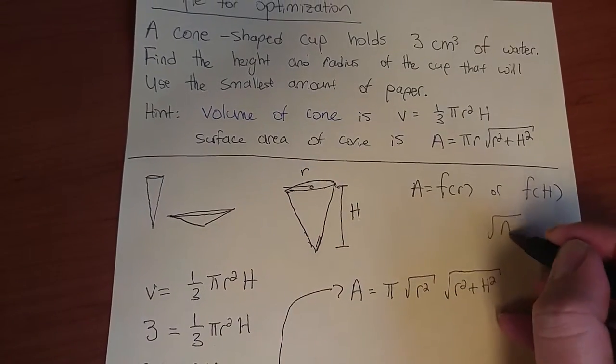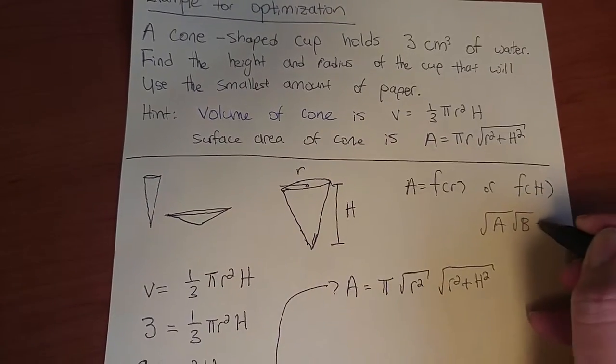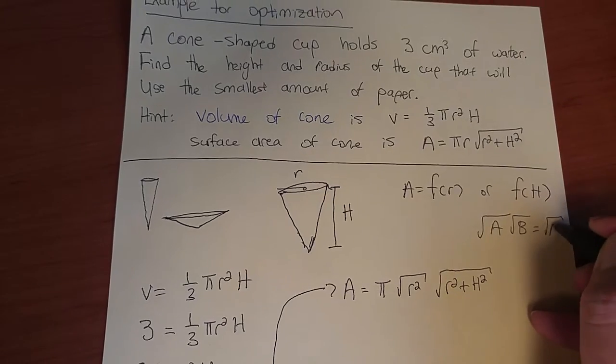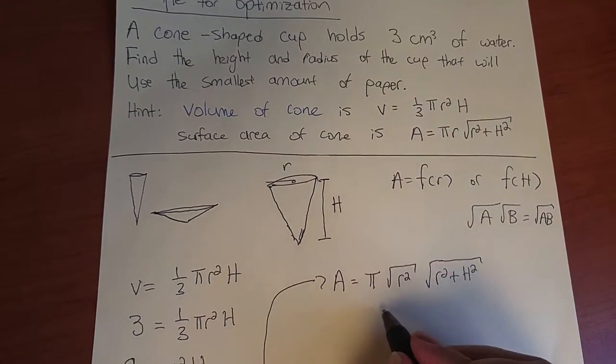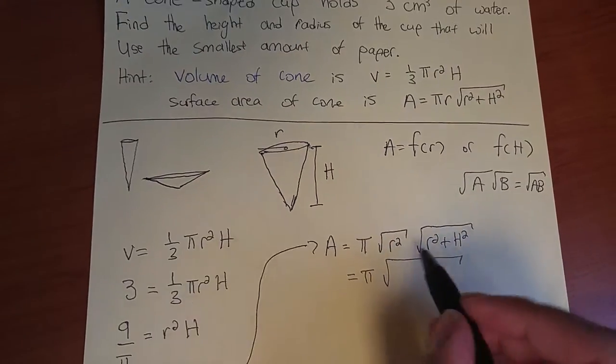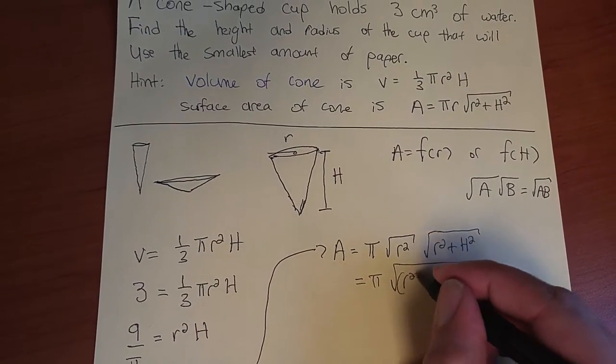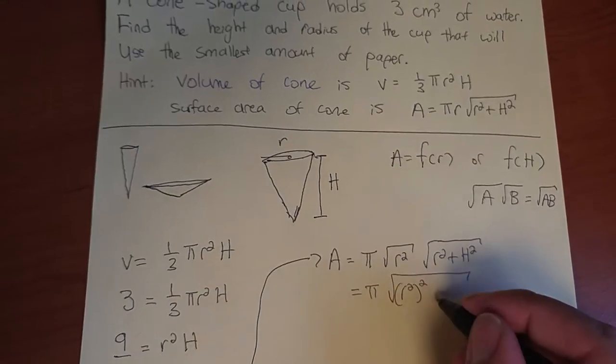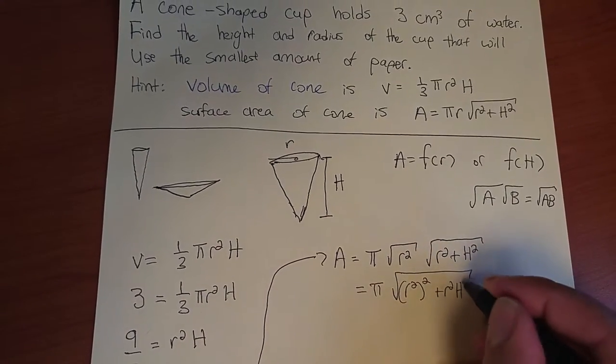If we have the root of a times root of b, we can write that as the root of a times b. Bring that r² inside the root. So π√(r² · r² + r² · h²), which is r⁴ + r²h².